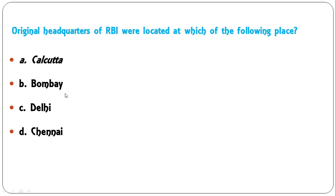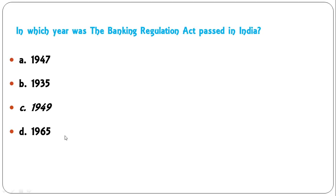Next question: the original headquarters of RBI were located at which of the following places — Calcutta, Bombay, Delhi, or Chennai? Many of you know that the headquarters of RBI is now in Mumbai. Originally it was in Calcutta, and in 1937 the headquarters was shifted to then Bombay. Currently we have the main headquarters at Mumbai and 19 regional offices across different cities. The correct answer is A, Calcutta.